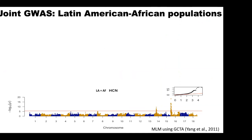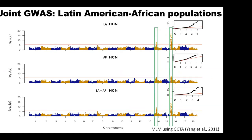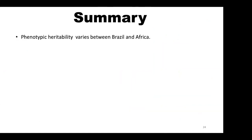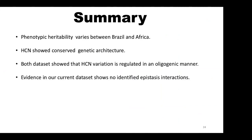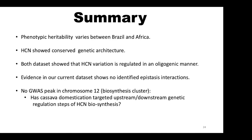We also performed a joint GWAS analysis and found the same peaks, with candidate SNPs clearly separated from the rest. Aligning it with the previous two results, everything aligned properly. Phenotypic heritability varies across the two datasets, but HCN genetic architecture is conserved in both. There is no evidence for epistasis interaction. Since we found no peak on chromosome 12 where the biosynthesis gene clusters are located, we speculate that domestication of cassava may have targeted upstream or downstream genetic regulation steps of HCN biosynthesis.